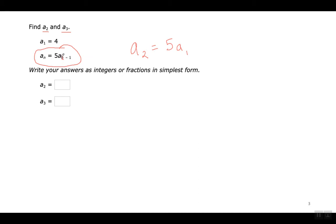Esta se llama una fórmula recursiva porque para poder usarla necesito el término que viene antes. Si ellos no me dicen inicialmente qué es el primer término, no lo puedo hacer porque lo necesito para esta fórmula. Por eso se llama una fórmula recursiva. Para encontrar el segundo término, tengo que sustituir el número 2 donde está la N — aquí y aquí. Cuando yo pongo un número 2 aquí y simplifico el 2 menos 1, me va a dar el 1. La fórmula dice: el segundo término es igual a 5 multiplicado por el primer término.